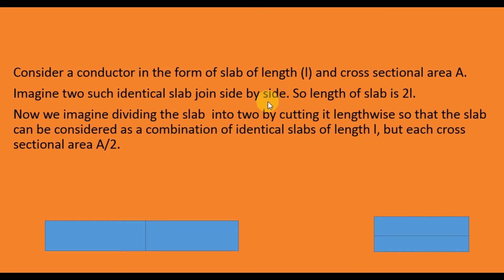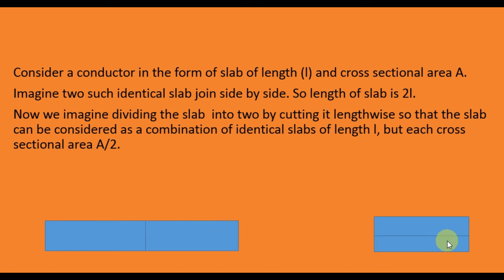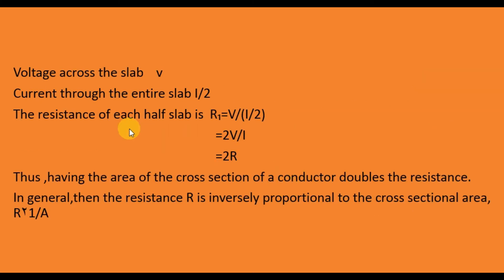Imagine two identical slabs joined side by side, so the total length becomes 2L. Now we also consider dividing a slab lengthwise, so the length remains L but the cross-sectional area becomes A/2. The voltage across the slab is V and the current through each half slab is I/2.